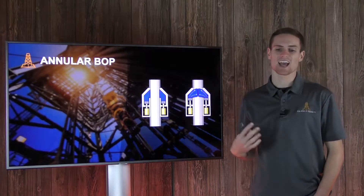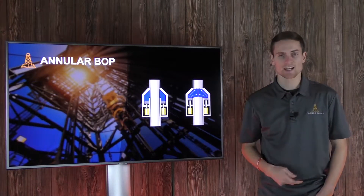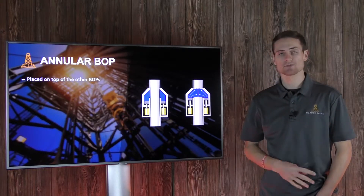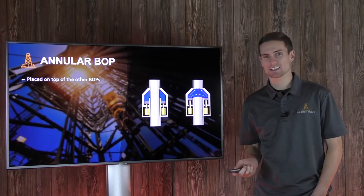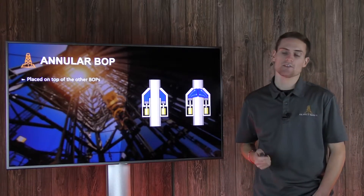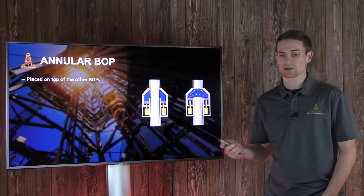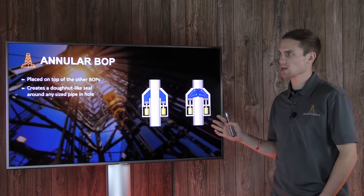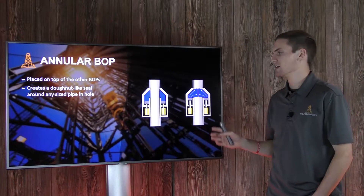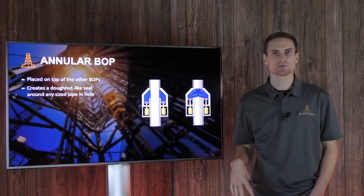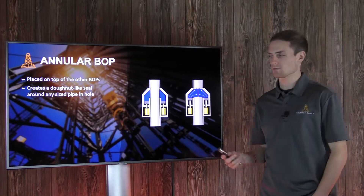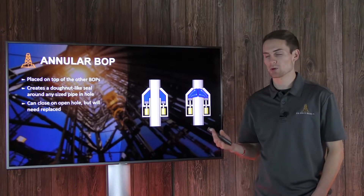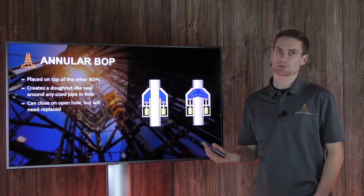Let's first discuss annular BOPs. An annular BOP is typically placed on top of all the other BOPs. It's at a lower pressure rating, which is one of the reasons it's placed on top. It actually works by creating a donut-like seal around any type or size of pipe in the hole. It can also close on an open hole, but once you do that it will need to be replaced.